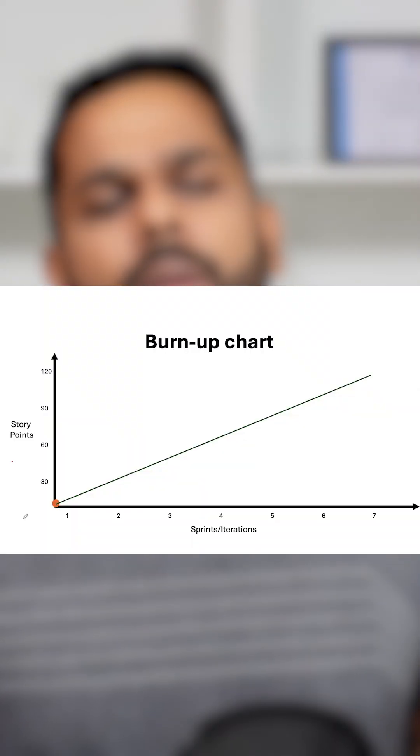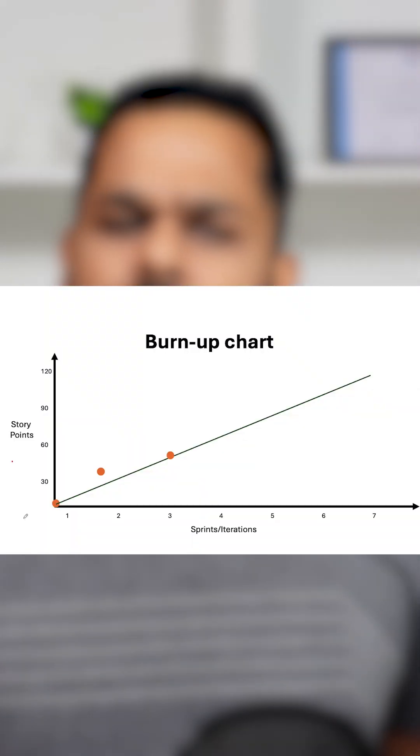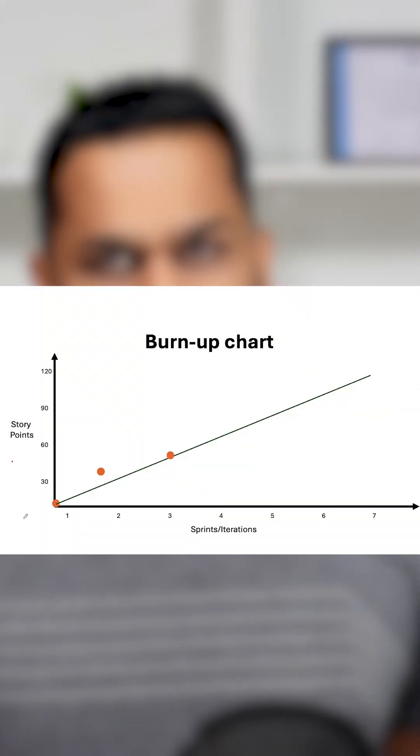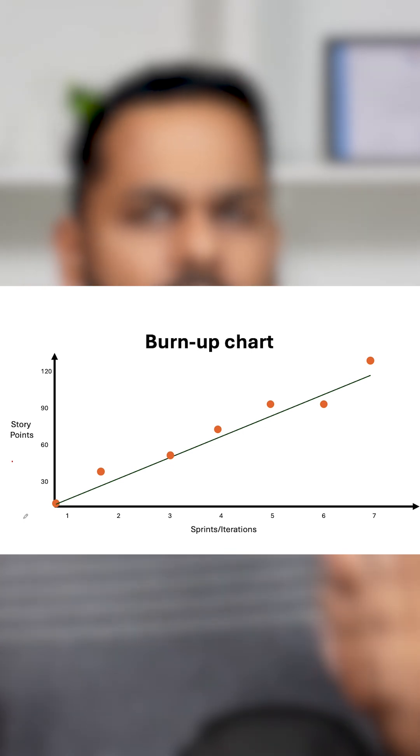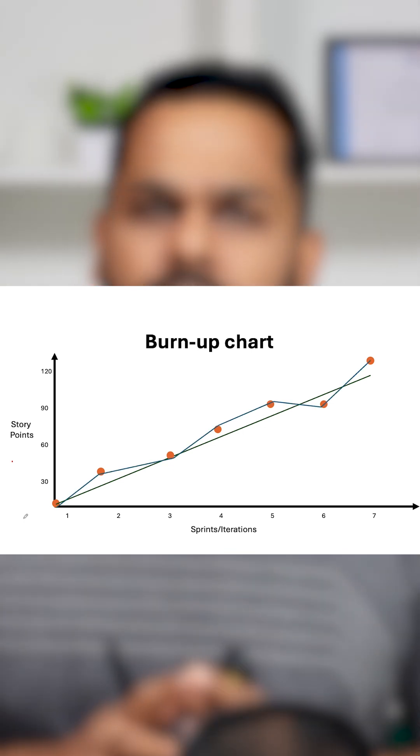The team would complete their work sprint by sprint, iteration by iteration. They will come to this chart and update their work one by one, whatever they have completed. And ultimately, you will see a chart something like this, which would give your actual performance as well.